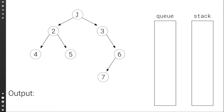So the output would be 1, 3, 2, 6, 5, 4, 7. If you notice, this is exactly the reverse of what we actually want. So if we were to reverse this output, we would get 7, 4, 5, 6, 2, 3, 1, which indeed is a reverse level order traversal.